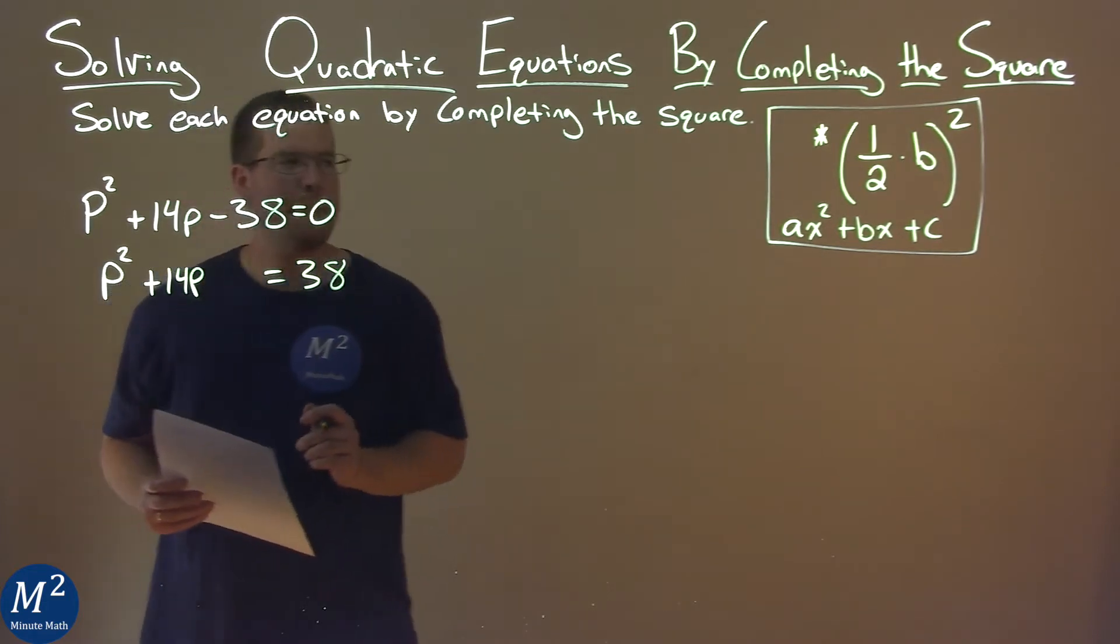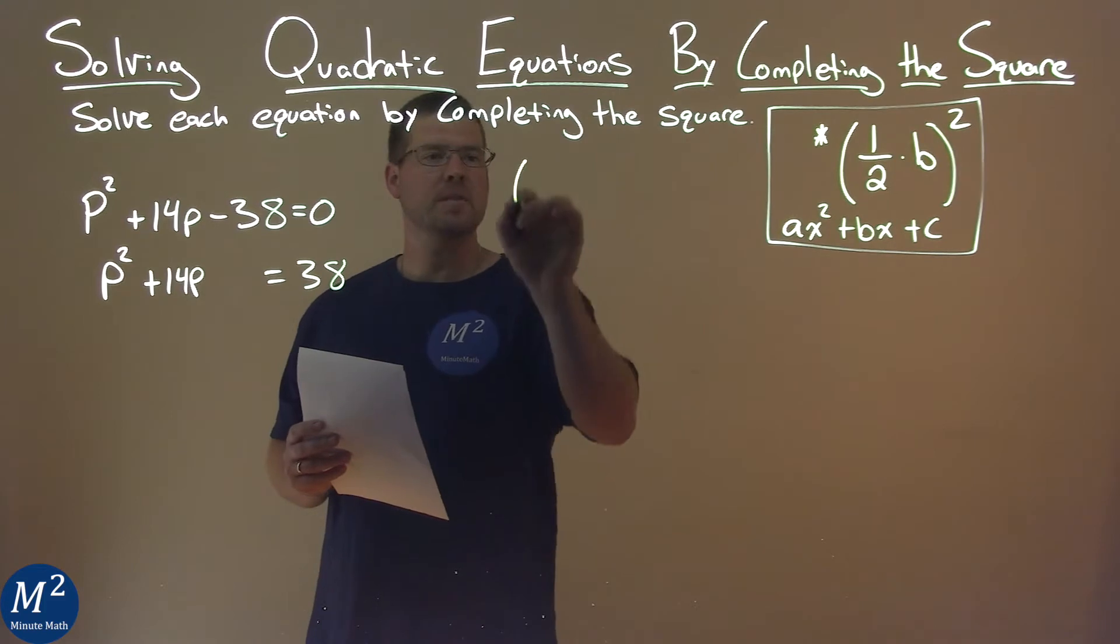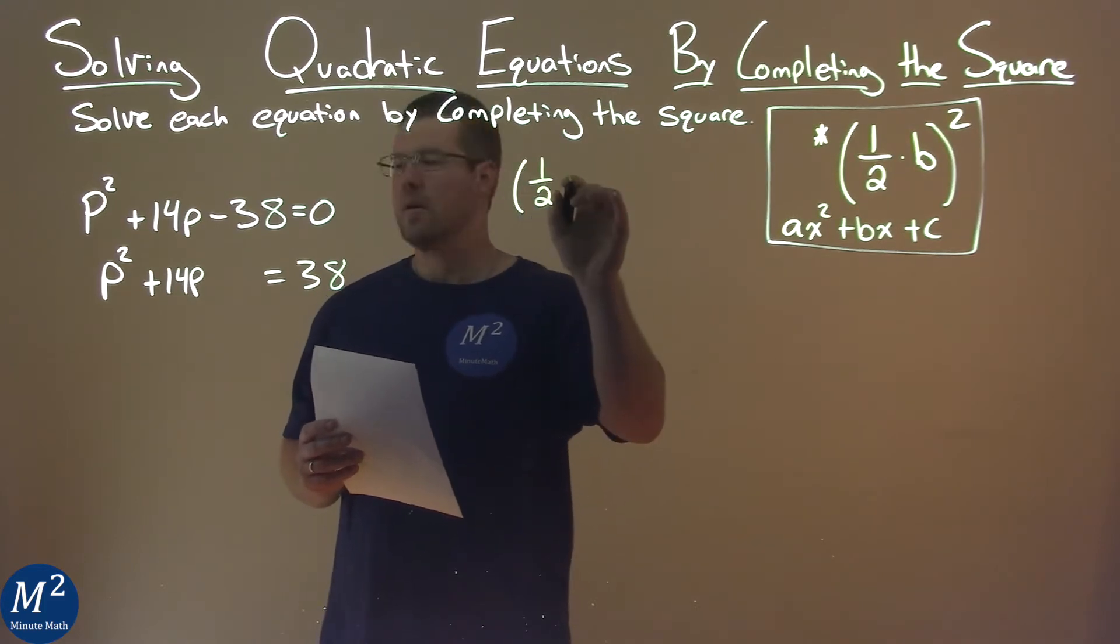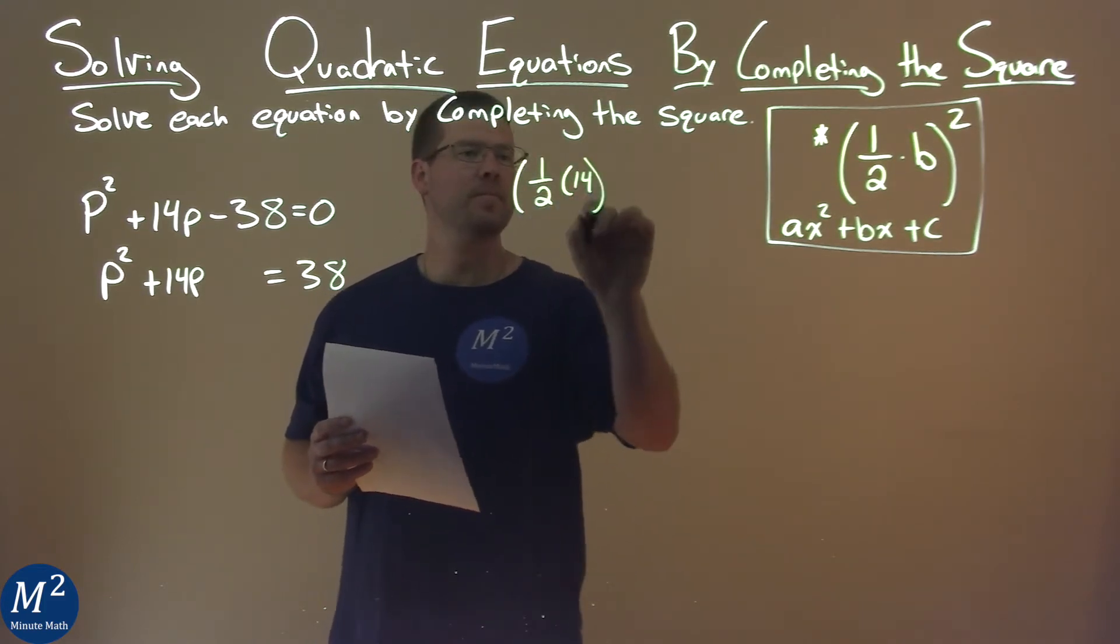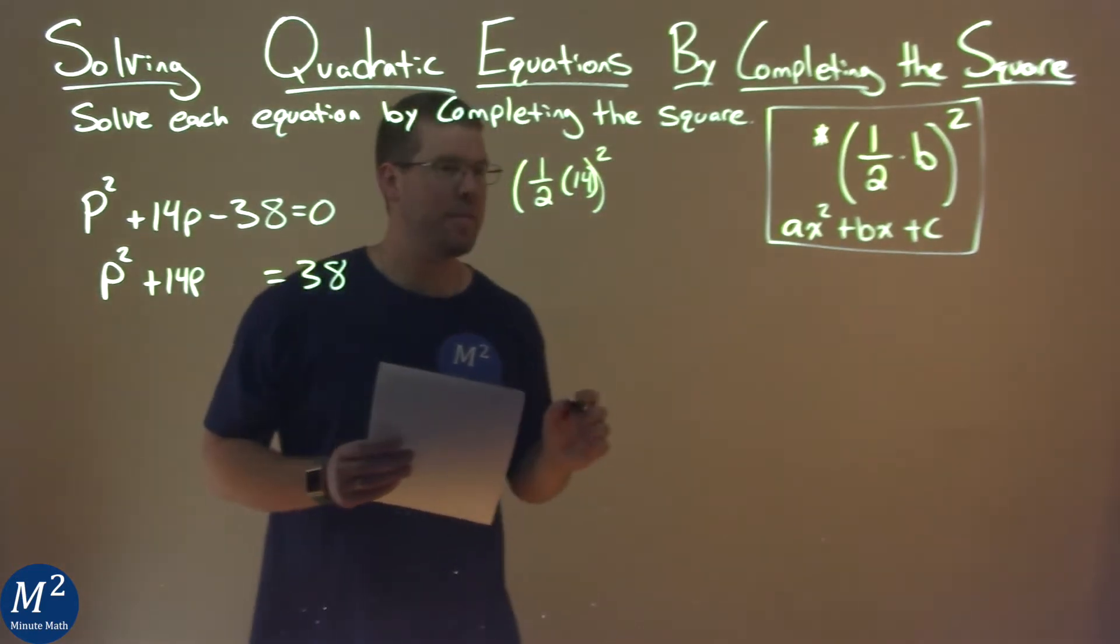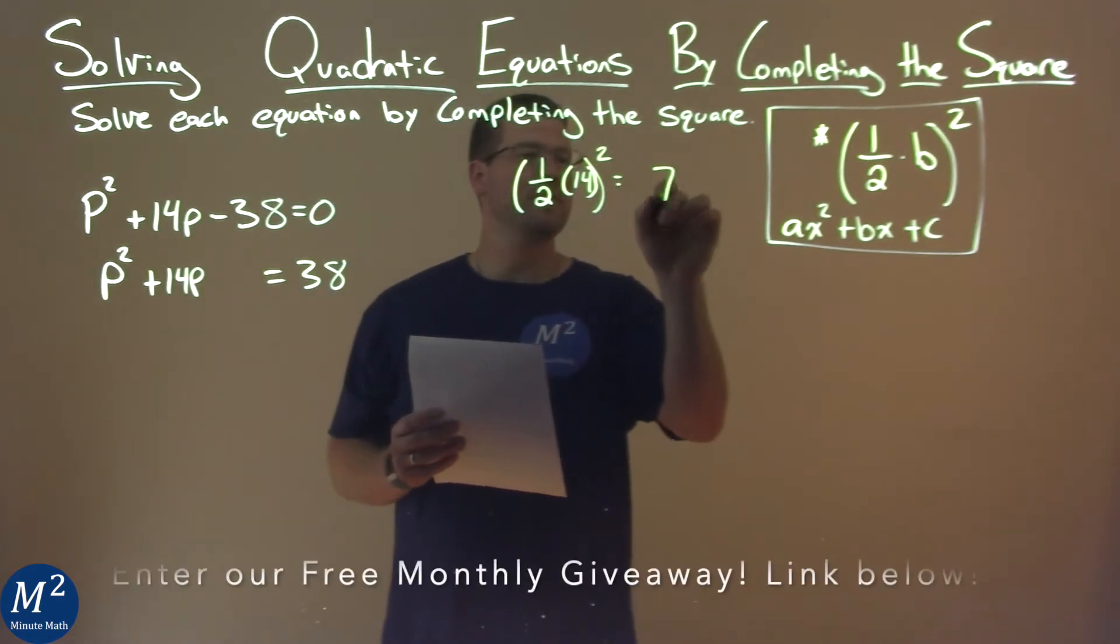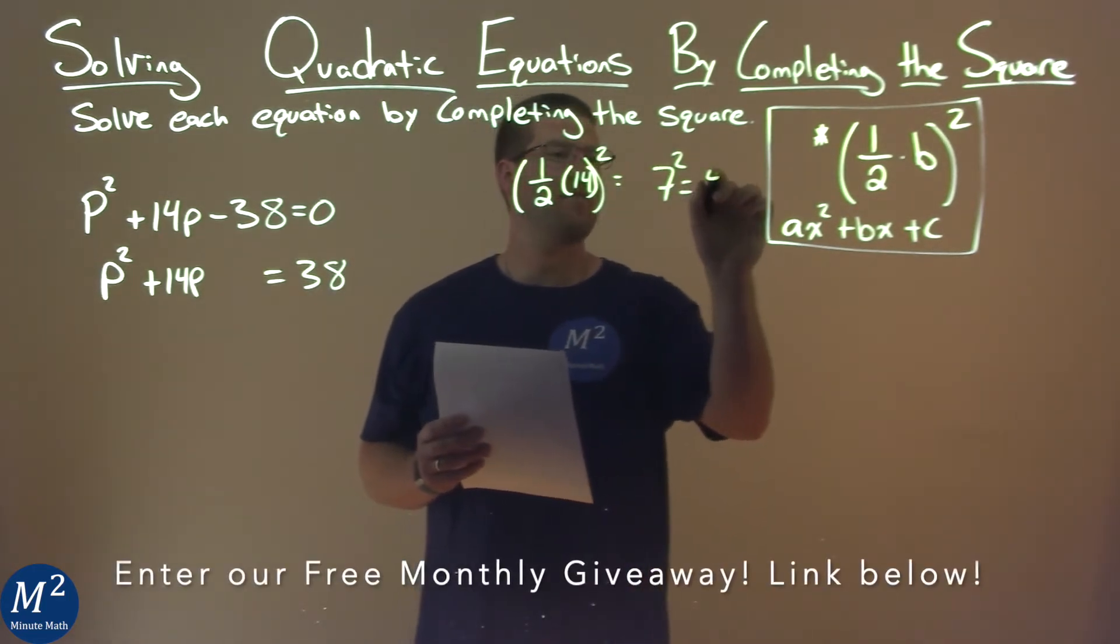Now we're going to look at that b value, 14. We're going to use our formula. So we take one half times that 14, and then we square that. One half times 14 is 7, so we have 7 squared, and that's 49.